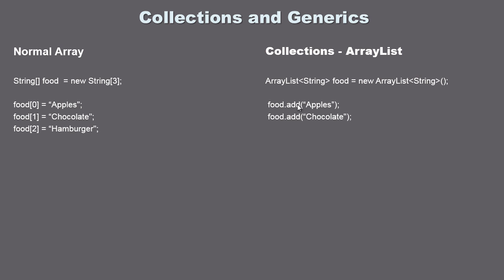If you leave the angle brackets empty you can mix data types, but almost everybody specifies a data type — mixing is not considered good practice. You do want to specify the data type unless you have a really good reason not to. That's a good start with collections and generics. In the next video we're actually going to code this up and use the ArrayList collection.